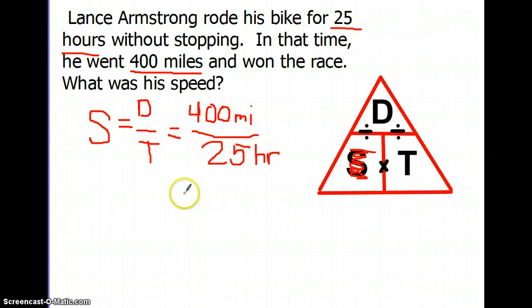Now we have speed equals 400 miles divided by 25 hours. Then you need to do that mathematical operation, and you would get, I guess Mrs. Bogenwright wants to do it in longhand instead of pulling out a calculator. So 400 divided by 25 would be 16.